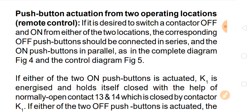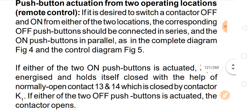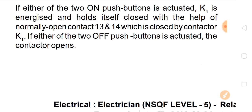Push button actuation from two operating locations — remote control: if it is desired to switch a contactor off and on from either of two locations, the corresponding off push buttons should be connected in series and the on push buttons in parallel, as shown in the complete diagram picture four and the control diagram. If either of the two on push buttons is actuated, K1 is energized and holds itself closed with the help of the normally open contact.